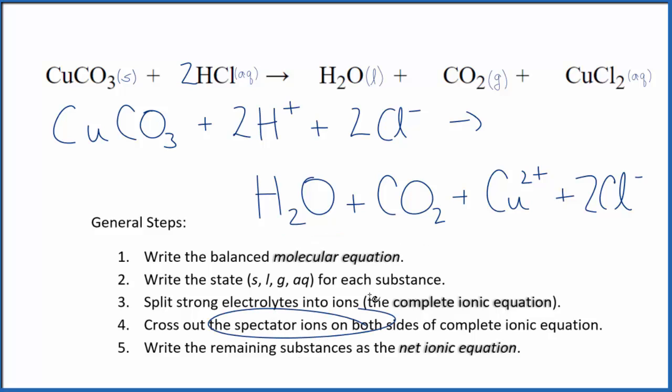Now we can cross out the spectator ions. They're the same on both sides. And really, the only thing that's the same in the reactants here and the products, those two chloride ions. So those are the spectator ions. We can cross those out. What's left, that's the net ionic equation for CuCO3 plus HCl.